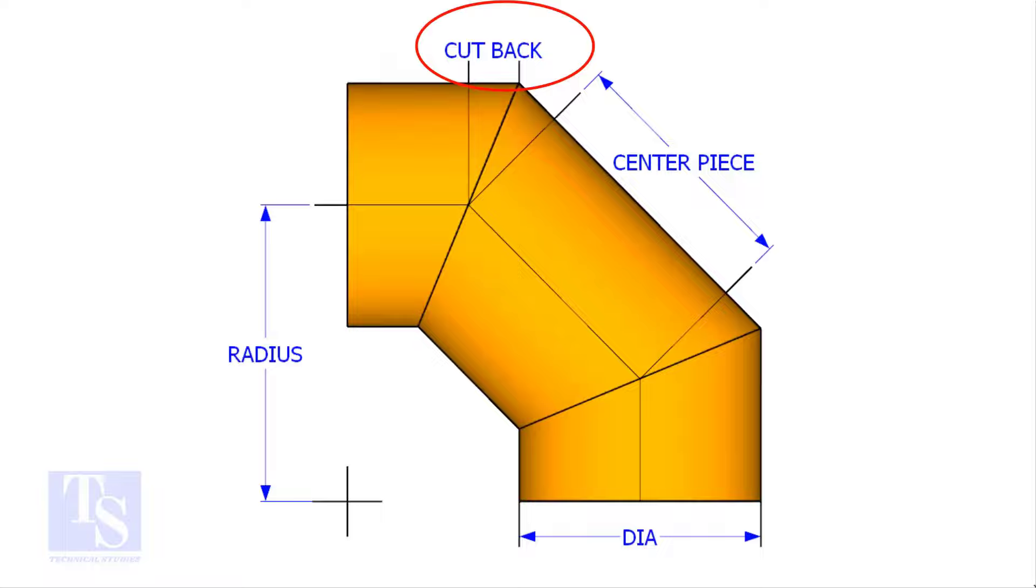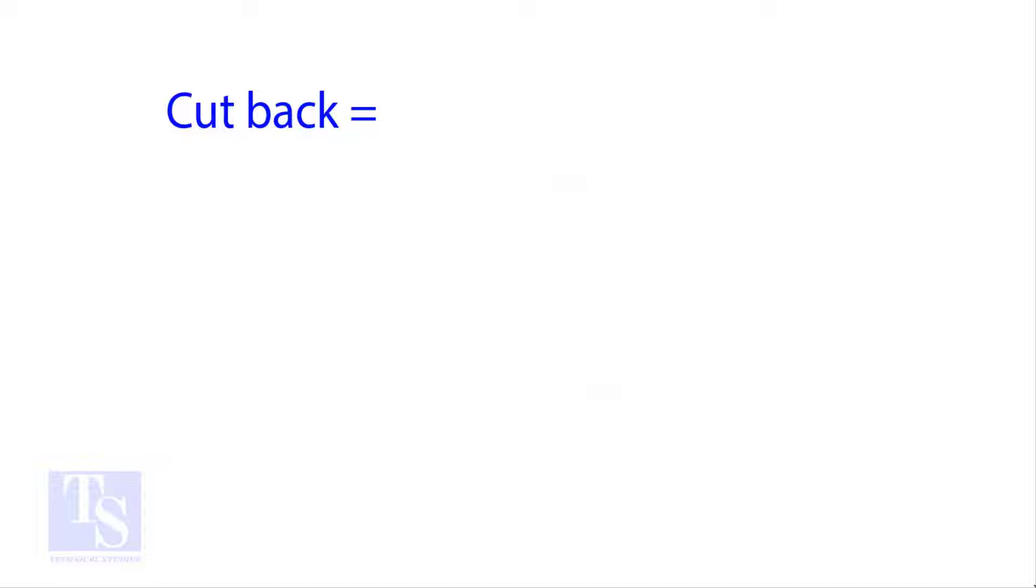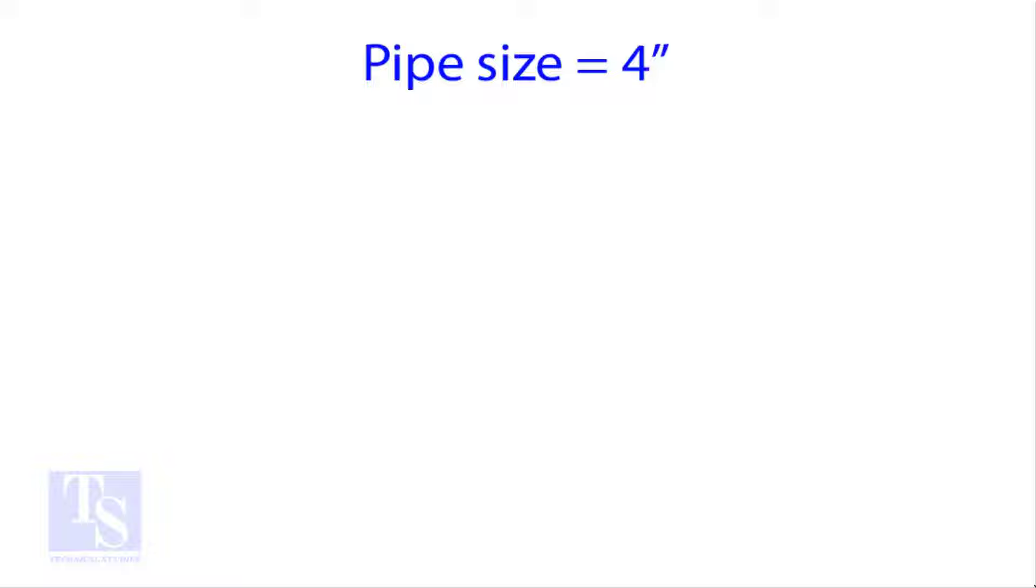This formula will work with up to nine cuts. The standard method to calculate the cutback is circumference times the wanted degree divided by 360 times number of cuts times 2. Let us try an example: calculate...